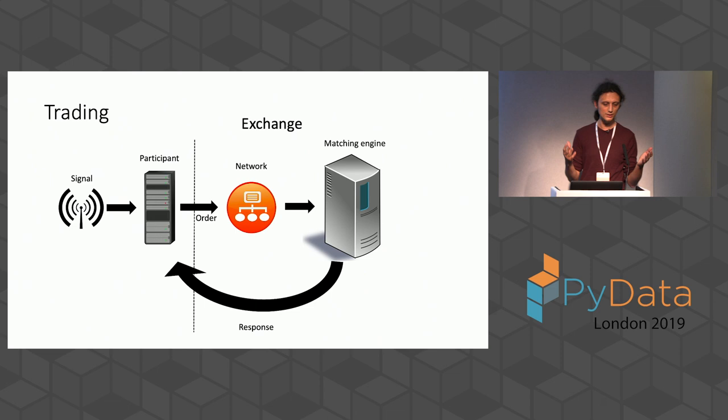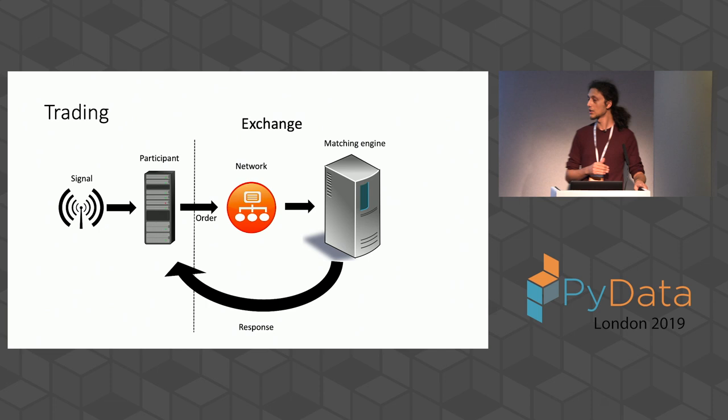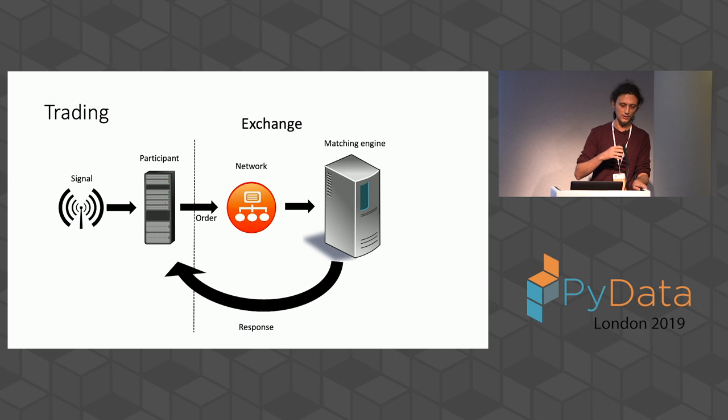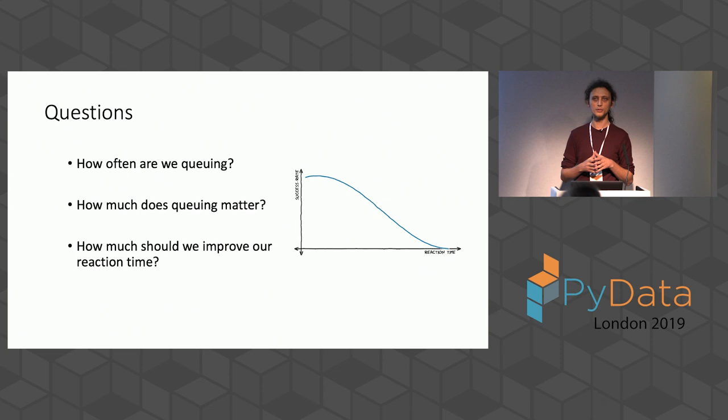The key questions we want to answer are: if I improve my reaction time a little bit, would it actually affect my chances? And the other question is: how much does this opportunity window matter? If I was late all the time, how many of my orders would end up being successful?